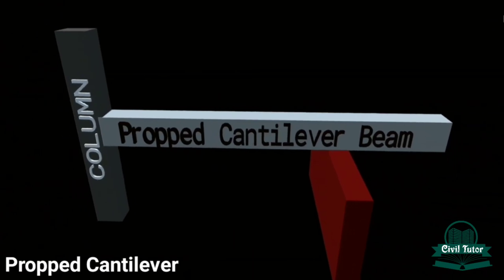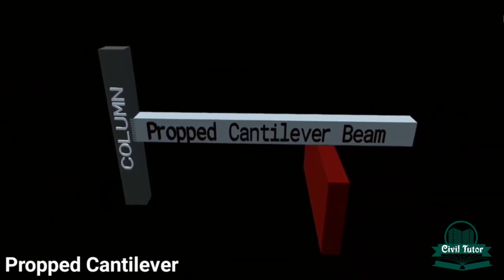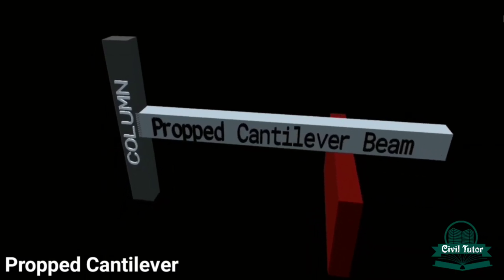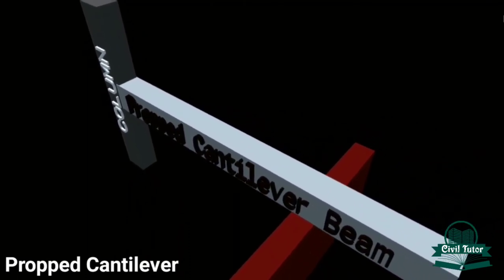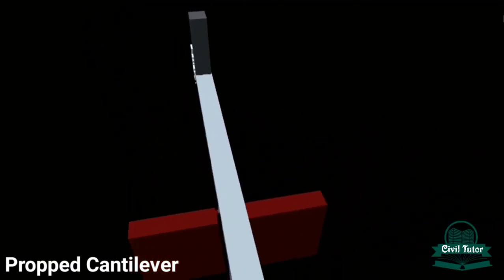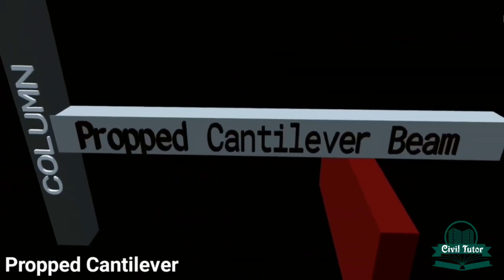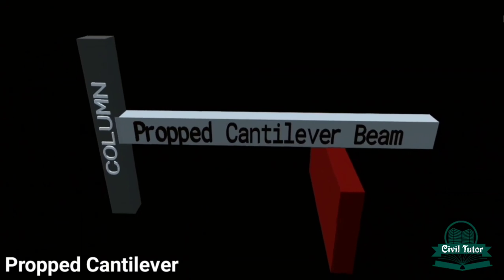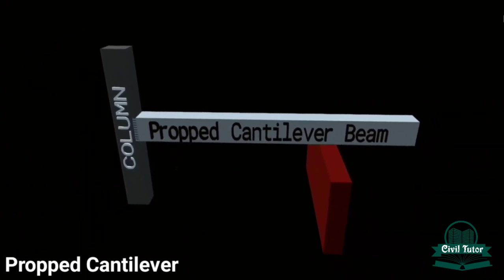The last one is the propped cantilever. A propped cantilever is similar to a cantilever beam whose one end is fixed and other end is free. The only difference is that the free end of cantilever beam is provided with support which may be a roller support, hinge support, or simple support. As I have shown here, the beam is fixed at one end and resting freely on a wall, that is simple support.